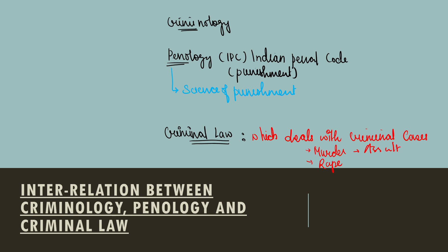We need to understand the difference between criminology, penology, and criminal law. Criminology helps penology and criminal law. It helps penology to decide the type of punishment according to the specific crime. Criminology also helps criminal law to prevent crimes, and to understand the nature of crimes and the nature of criminals.